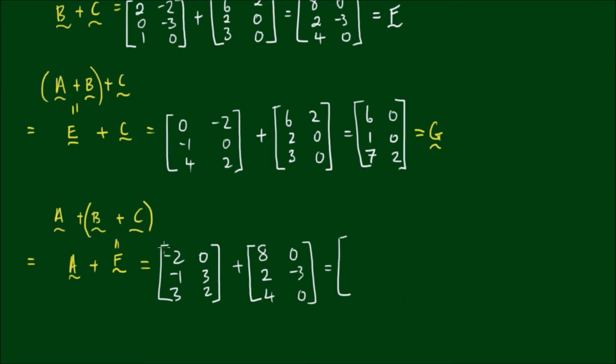Okay, so the resultant matrix is, we've got negative 2 and 8 which gives 6. 0 and 0 gives 0. Negative 1 and 2 gives 1. 3 and negative 3 gives 0. 3 and 4 gives 7, and 2 and 0 ends up as 2.